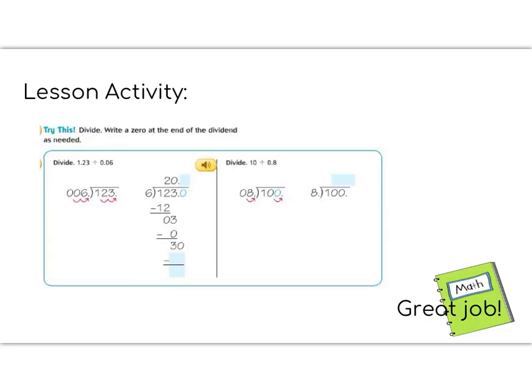Today's lesson activity is the try this section on your pages. You do not need to write it down in your math notebook. You just need to solve it on the paper and be ready to show your teacher when you get to the table. We are going to divide, adding a decimal and a 0 onto the end of our dividend to make sure that we get a whole number answer and not a remainder. So we're going to divide 1.23 divided by 0.06.